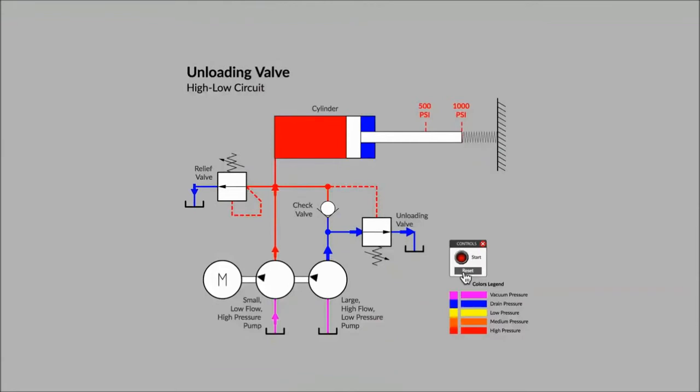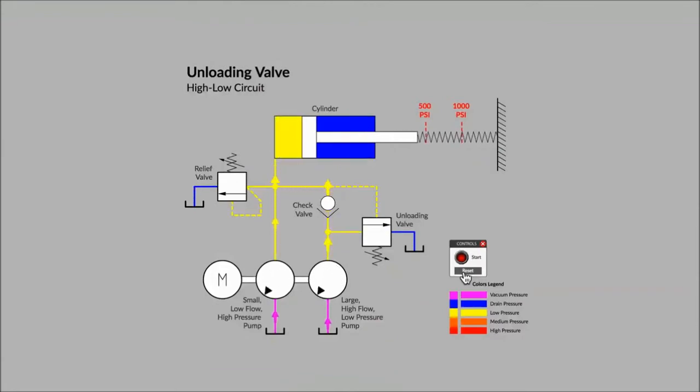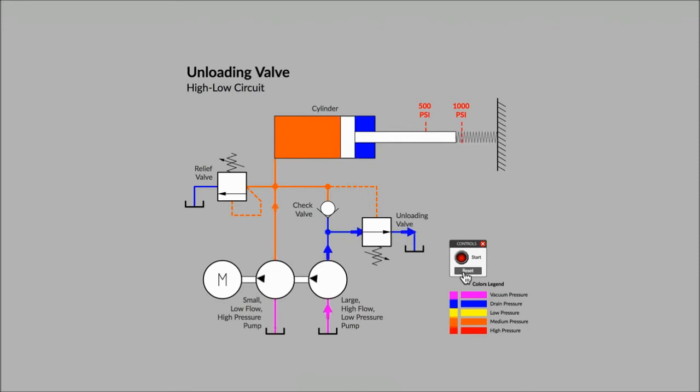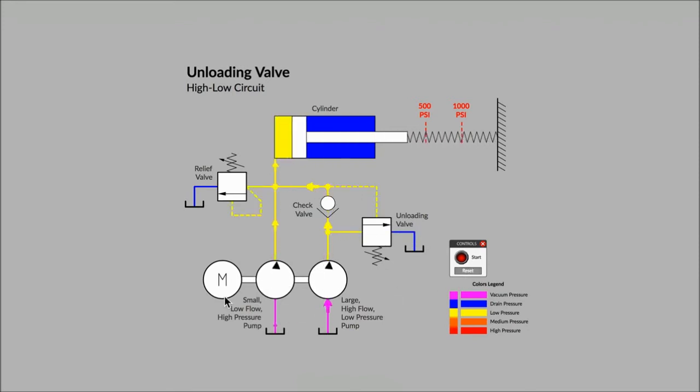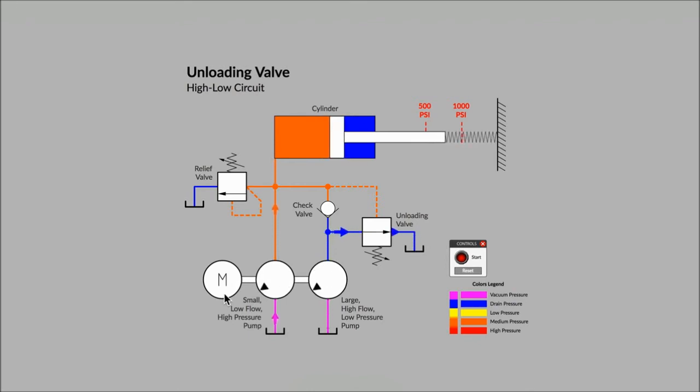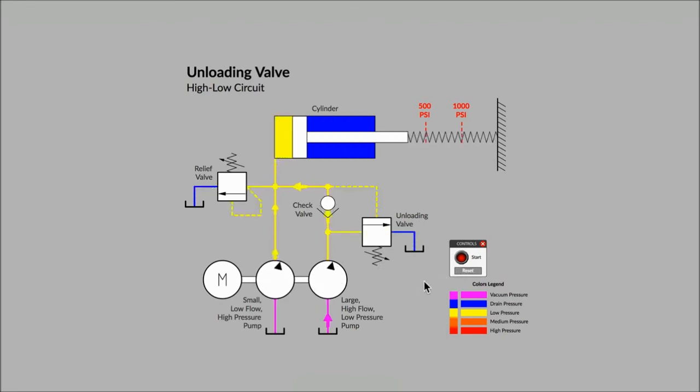It is not uncommon to find an unloading valve in use with fixed displacement pumps. An unloading valve can be used to create what is sometimes known as a high-low circuit. And it is also used to minimize the power required from the prime mover, an electric motor in this case, when the system pressure gets to a level that might cause the motor to stall. What you will see is that a small electric motor can still continue to turn one of the two pumps, the left pump, now working at a higher system pressure by unloading the pump on the right.